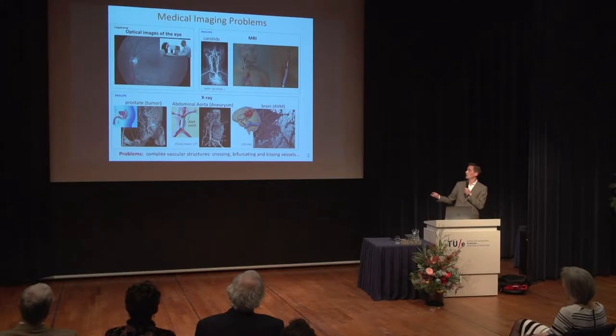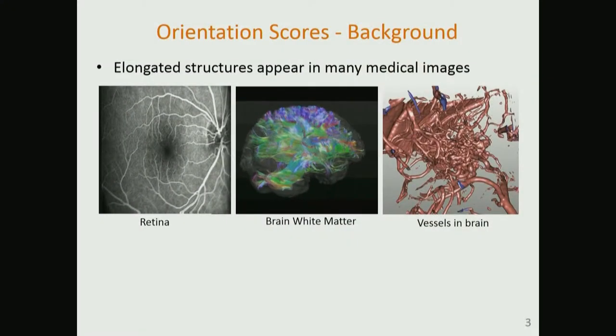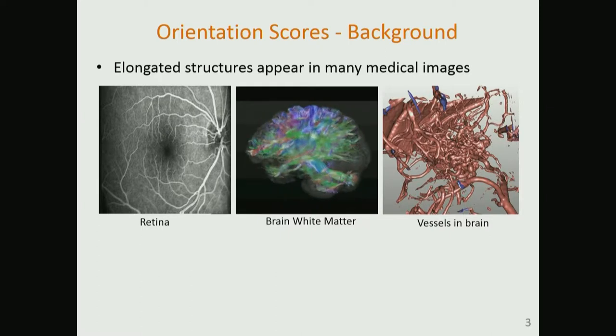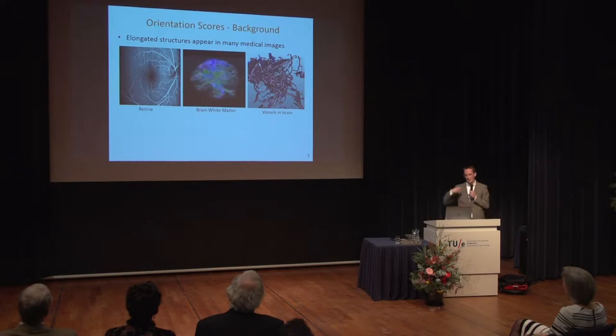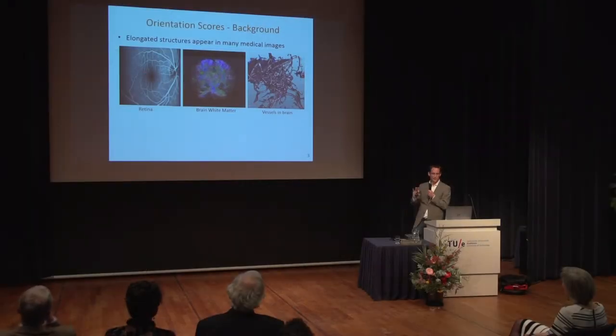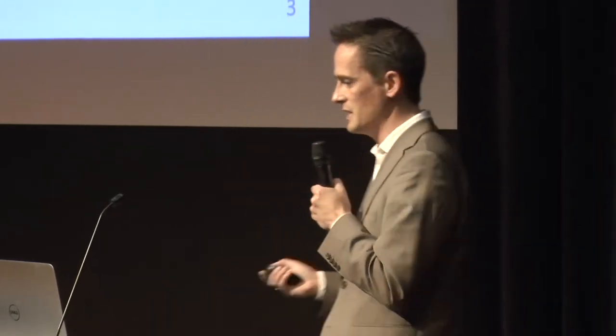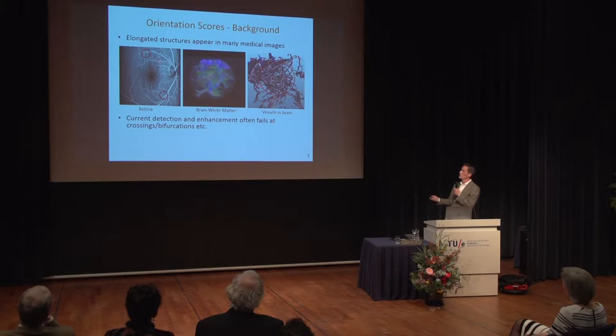All of these problems have in common that we need to enhance and detect complex vascular structures, including crossings, bifurcating and kissing vessels. In many medical imaging applications — including diffusion-weighted MRI — you would like to identify neural fibers and brain white matter to quantify structural connectivity. Typically, you would like to reduce the radiation dose, which causes low contrast images. This makes it hard to automatically detect elongated structures that exhibit many crossings and bifurcations.